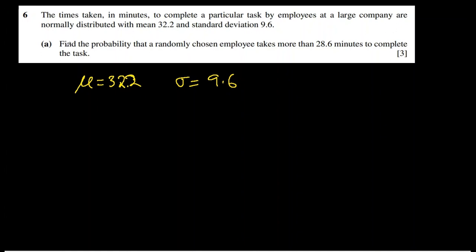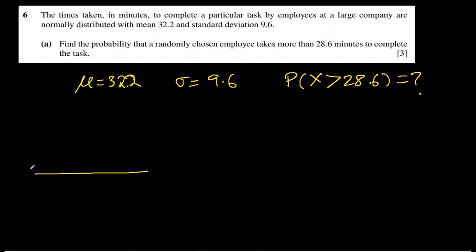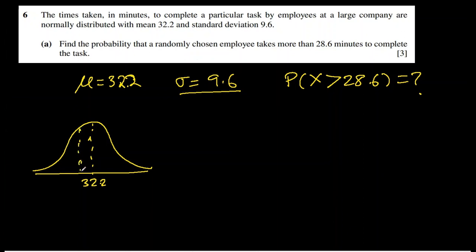Question 6: the time taken in minutes to complete a task by employees is normally distributed with mean 32.2 and standard deviation 9.6. Find the probability that a randomly chosen employee takes more than 28.6 minutes. Let's visualize: the mean is 32.2 and 28.6 is to the left of it. We want the area under the curve from 28.6 upward.